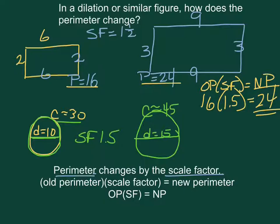Now could we have used old perimeter times our scale factor equals our new perimeter on the circle, even though perimeter is pretty much the same word as circumference for a circle? So let's try it.